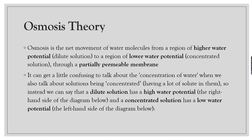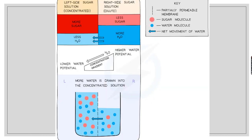Instead, we say that a dilute solution has a higher water potential, and a concentrated solution has a lower water potential. Looking at the diagram, you can see a partially permeable membrane shown as dotted lines. Initially, one side has more water molecules and the other has fewer, and you can also see differences in solute molecules. When discussing osmosis, we always focus on the movement of water molecules.